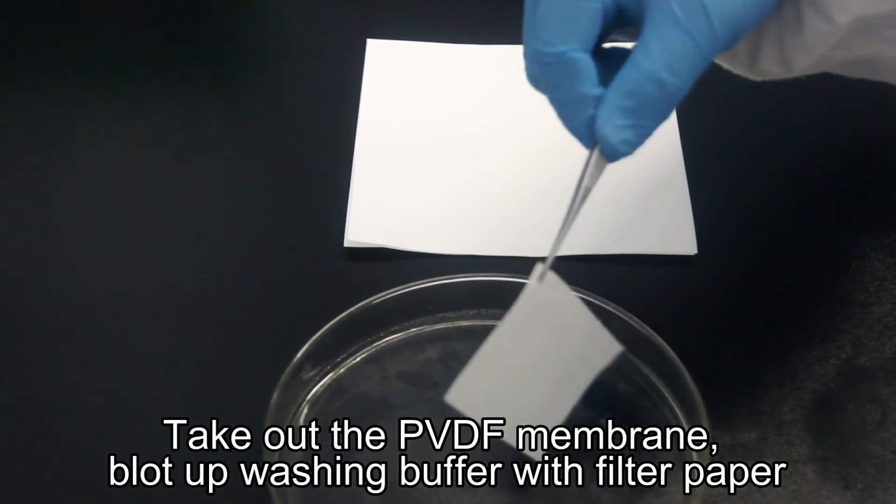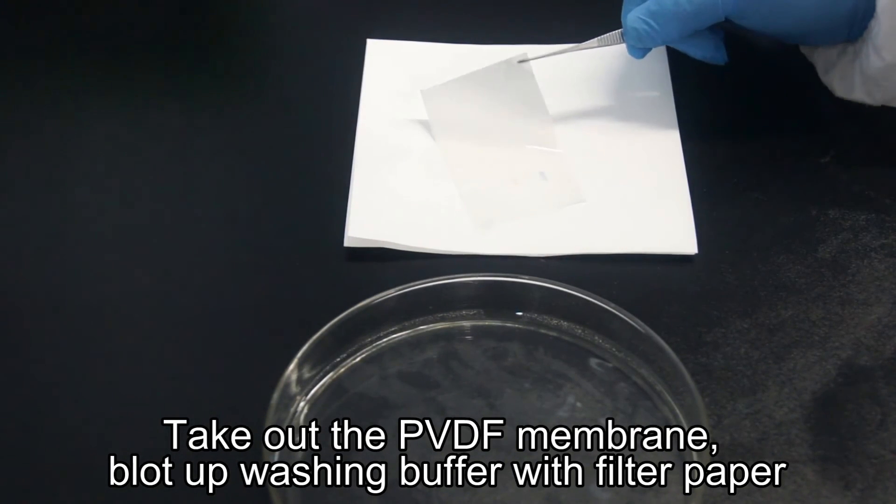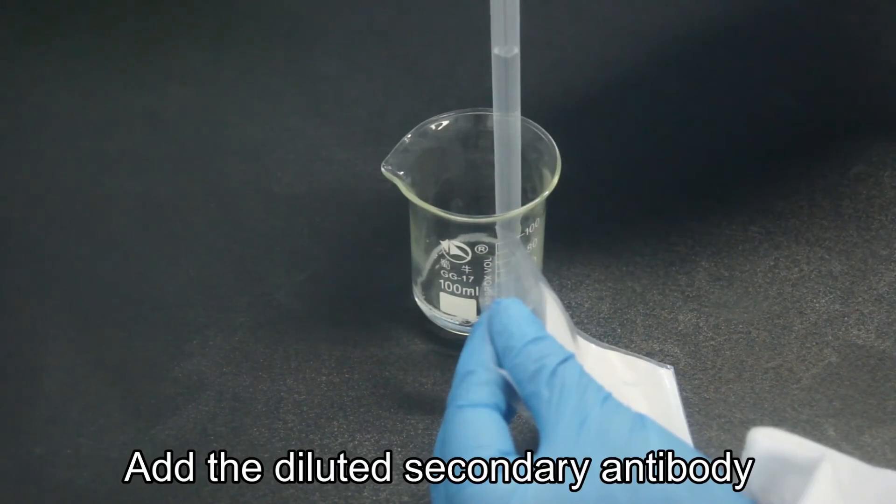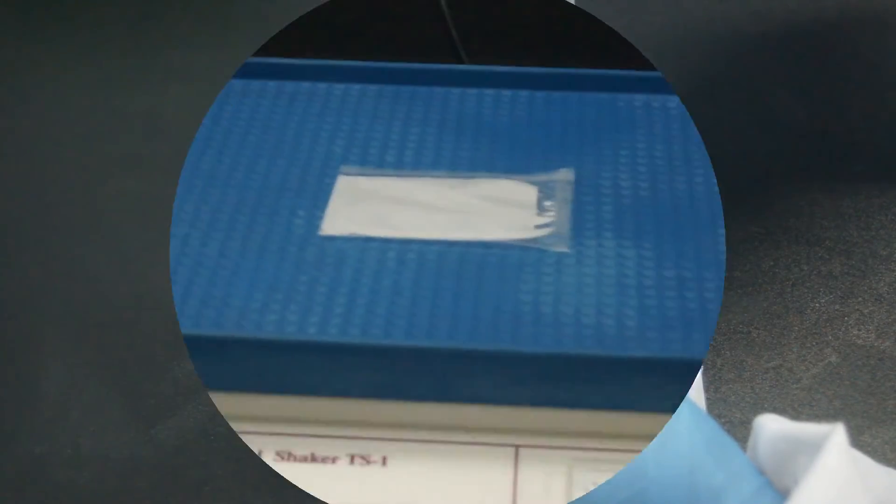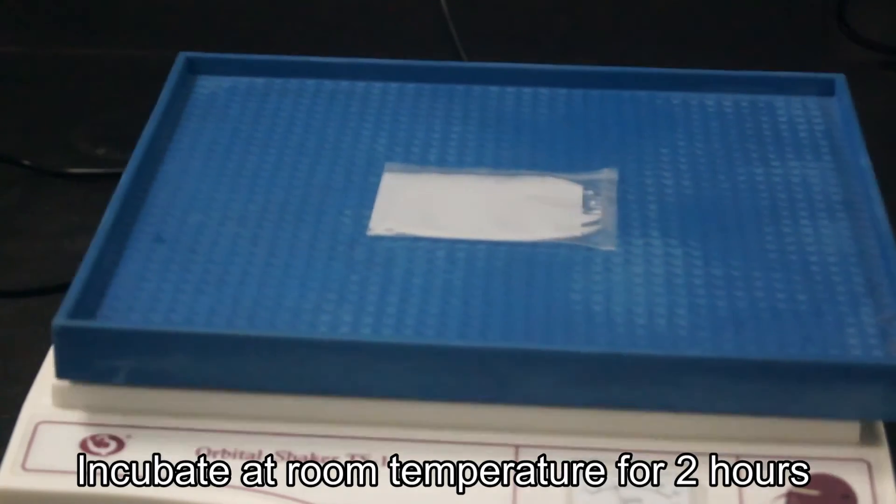Secondary antibody incubation: Take out the PVDF membrane after washing. Blot the washing buffer up with filter paper. Add the diluted peroxidase conjugated secondary antibody at the suggested dilution. Incubate the secondary antibody on the shaker for 2 hours at room temperature.